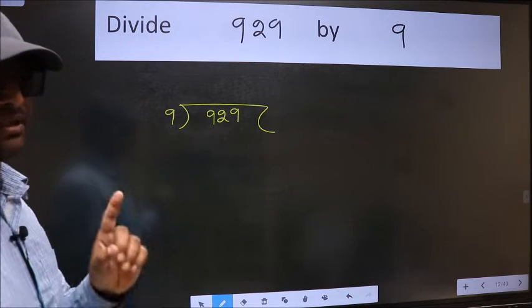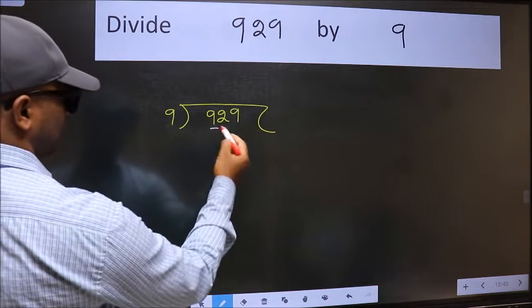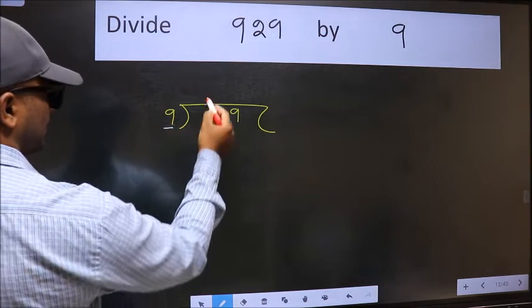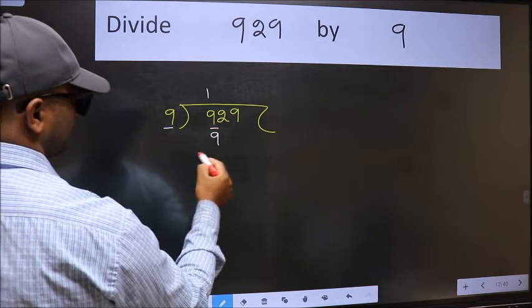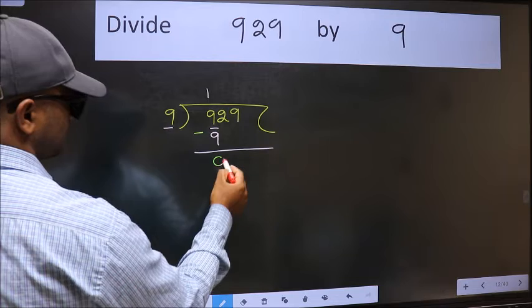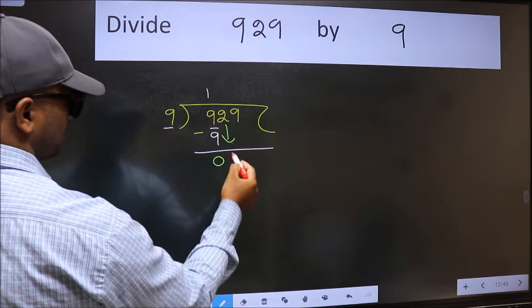This is step one. Here we have 9 and here 9. When do we get 9 in the 9 times table? 9 times 1 is 9. Now we should subtract and we get zero. After this, bring down the next number, so 2 comes down.